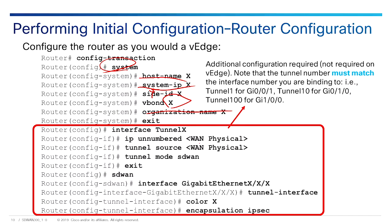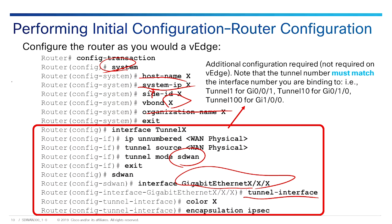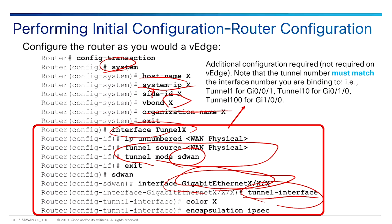We're going to exit, create a tunnel interface, and make it IP unnumbered to the physical interface we're going to use. The interface number is bound as follows: tunnel 1 for GigabitEthernet 0/0/1, tunnel 10 for GigabitEthernet 0/1/0, tunnel 100 for GigabitEthernet 1/0/0. These have to match. The tunnel mode is SD-WAN. Then we go into SD-WAN configuration, go to that interface, specify it as a tunnel interface, give it a color and an encapsulation. Note that we are configuring the tunnel interface twice — under the tunnel interface and under the physical interface — and those must match for the tunnel to come up.